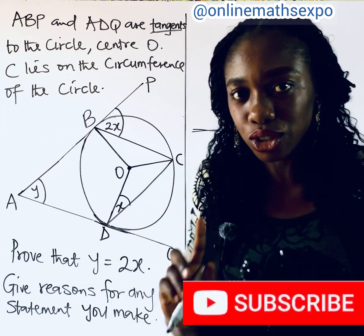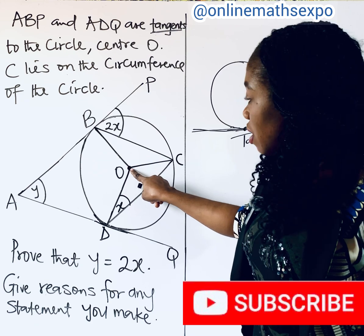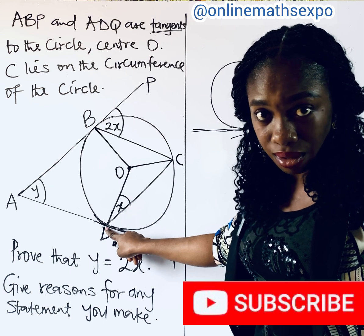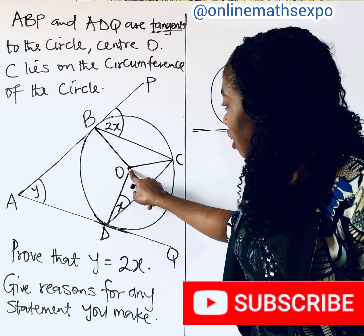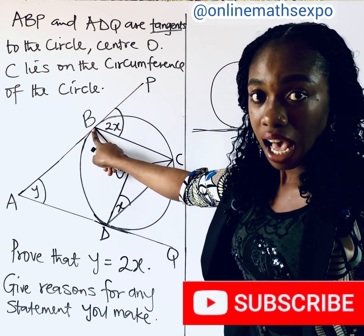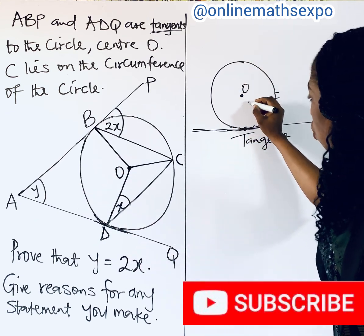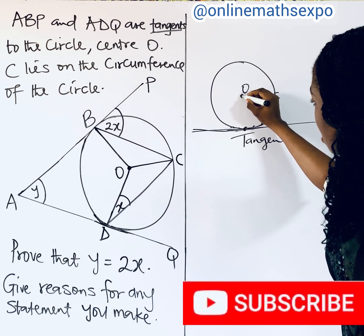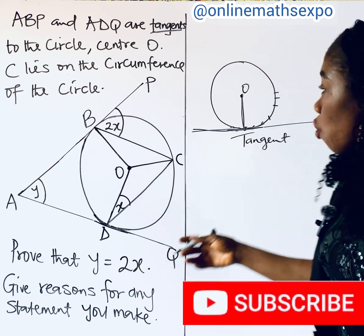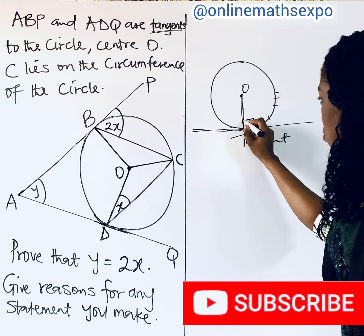Now let me remind you of one of the tangent theorems. When you look at this circle, the line that runs from the center touches the tangent at point D, and there's another line from the center touching the tangent at point B. The theorem states that whenever a radius touches a tangent, it is perpendicular — it makes an angle of 90 degrees.